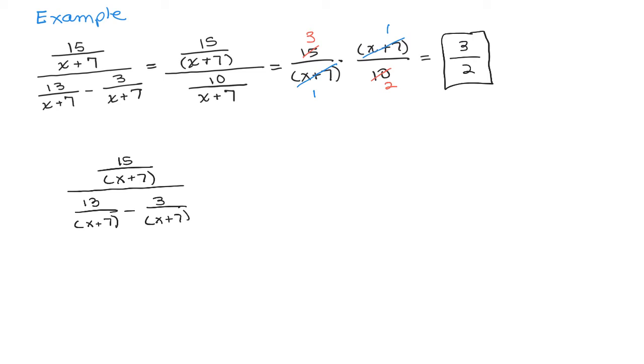And notice, in both the numerator of the complex fraction and the denominator, all the denominators are the same. It's X plus 7. So that's actually the least common multiple of all the denominators.